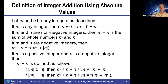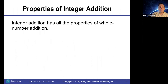And if the absolute value of m is less than the absolute value of n, then m plus n and n plus m are both equal to the opposite of the absolute value of n minus the absolute value of m. And we will probably never use that definition again.